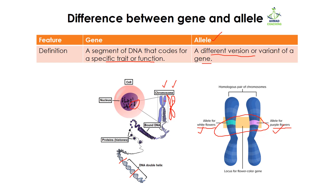Think of it this way: you have a car. The car is the gene. But when it comes to alleles, the car may be a sports car, it may be a taxi, or it may be a BMW. So the variants are the alleles, but the main category is the gene.